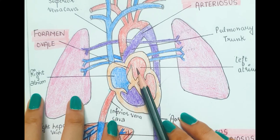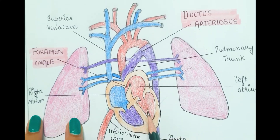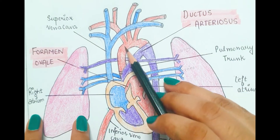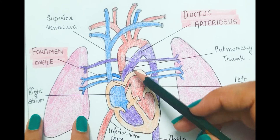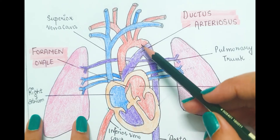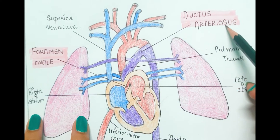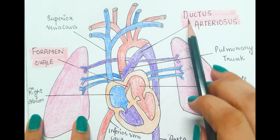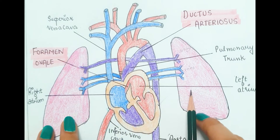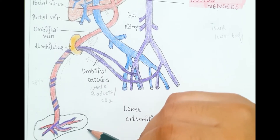The second shunt is the foramen ovale, which is present between the right atrium and the left atrium of the heart. The third shunt is the ductus arteriosus — the connection between the aorta and the pulmonary artery. These second and third shunts allow blood to bypass the lungs.